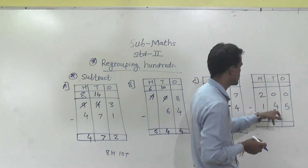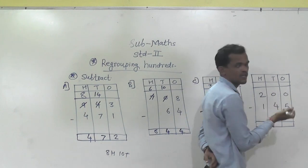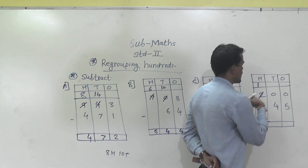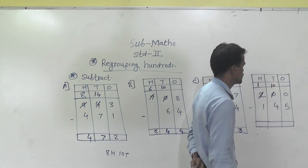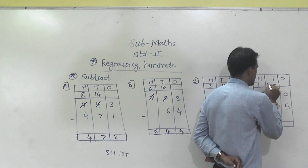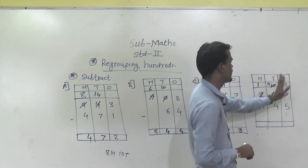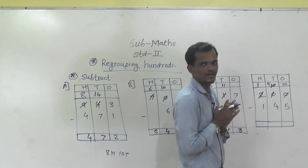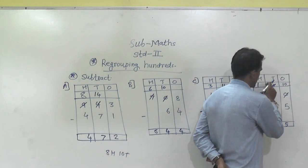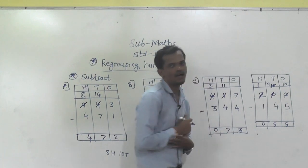Next example: 200 minus 145. Ones place: 0 minus 5 is not possible. Tens place: 0 minus 4 is also not possible. So regroup the hundreds: 200 into 100 and 10 tens. Then regroup again: those 10 tens into 9 tens and 10 ones. Now subtract: 10 minus 5 is 5, 9 minus 4 is 5, and 1 minus 1 is 0. So 55 is the answer.